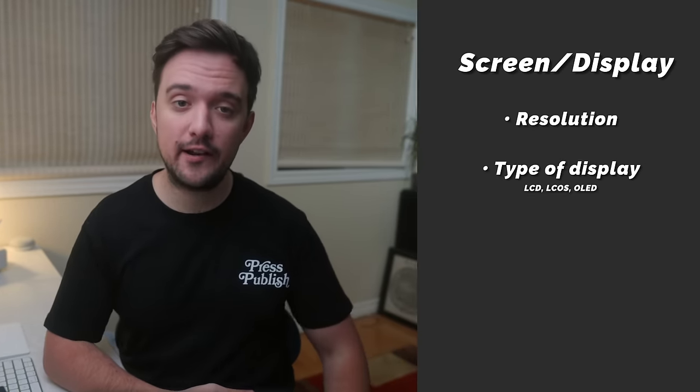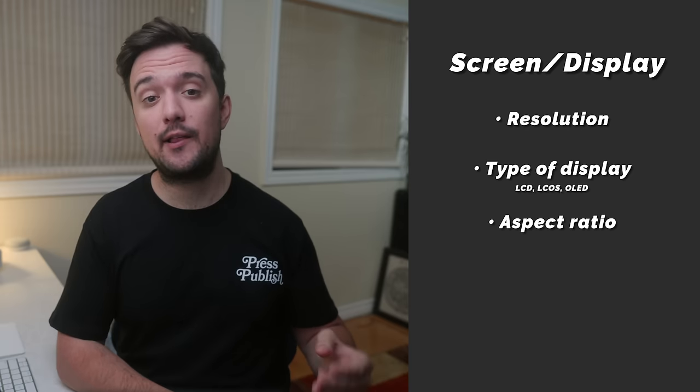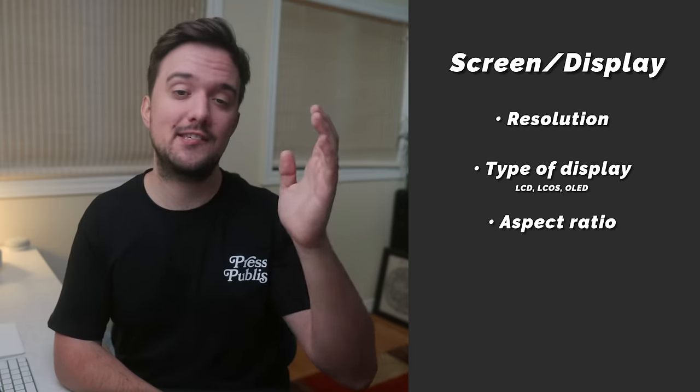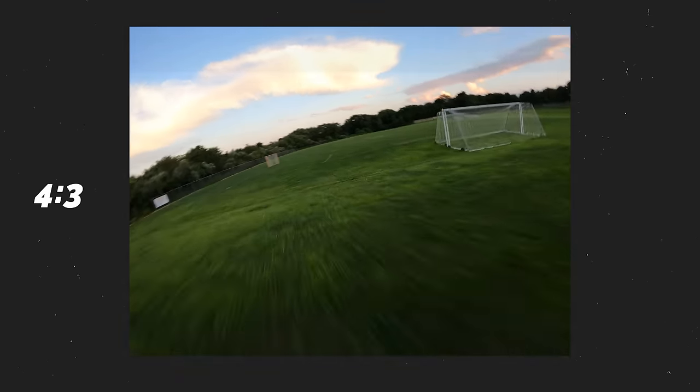After that, you'll also want to note the aspect ratio. Some goggles display 4x3 video, and some display 16x9 video, which is slightly more narrow and shows a bit less information. Ideally, it's nice to have goggles that can do both and allow you to switch back and forth. I personally like 4x3 most of the time because it lets me see more, but I switch to 16x9 when filming something important because the framing is closer to what my final image will be out of the GoPro.